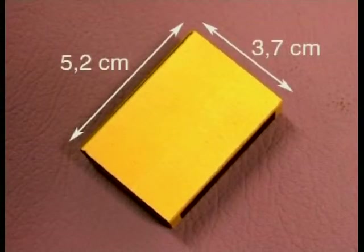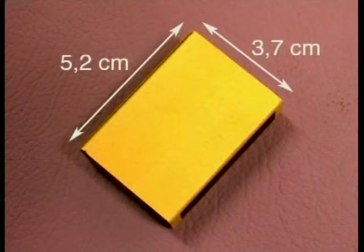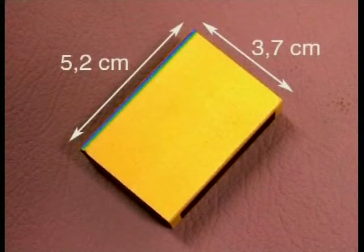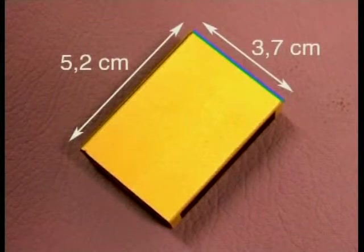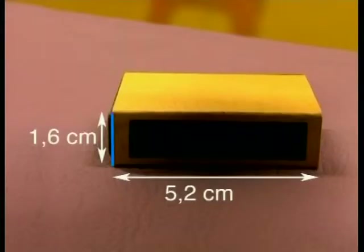Have a look at this matchbox. In a previous lesson, we measured all its sides and we found that this side was 5.2 cm. This side here was 3.7 cm and the height here was 1.6 cm.